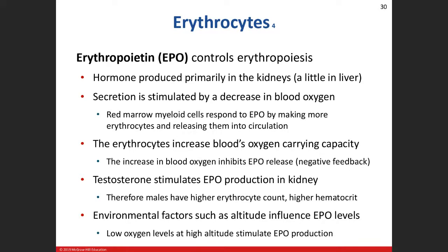We start to produce more red blood cells, which eventually increases blood oxygen levels. Once the levels rise, the receptors in the kidneys detect that and stop production of erythropoietin — that's the negative feedback system. So decreased blood oxygen stimulates erythropoietin production, increased red blood cells raise oxygen levels, and the kidneys shut down EPO production via negative feedback.